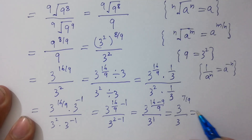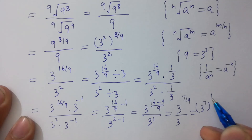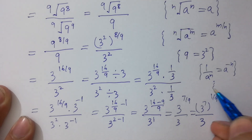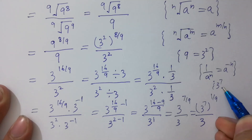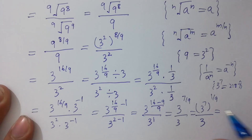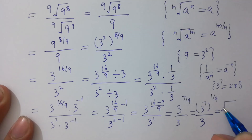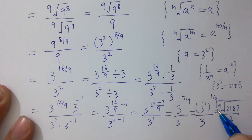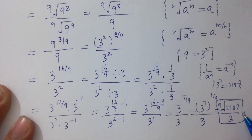And 3 to the power 7 to the power 1 over 9 is the same as 9th root of 3 to the power 7. Since 3 to the power 7 equals 2187, it will be equal to 9th root of 2187 over 3, which is our correct answer.